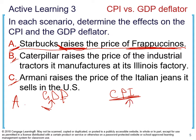You might think, what if I don't buy Frappuccinos? Your personal CPI may not be affected, but the general CPI reported by the BLS will still be affected. The consumer basket has 90,000 products in it, and there are many products you personally don't consume — like a BMW. If the price of a BMW changes, you personally aren't affected, but the general CPI will change.